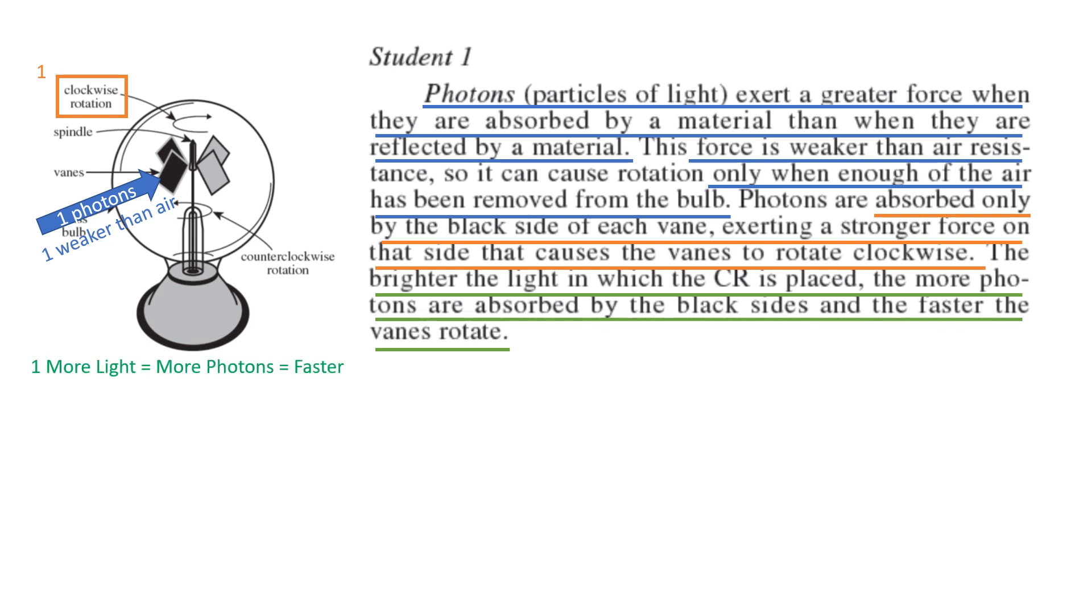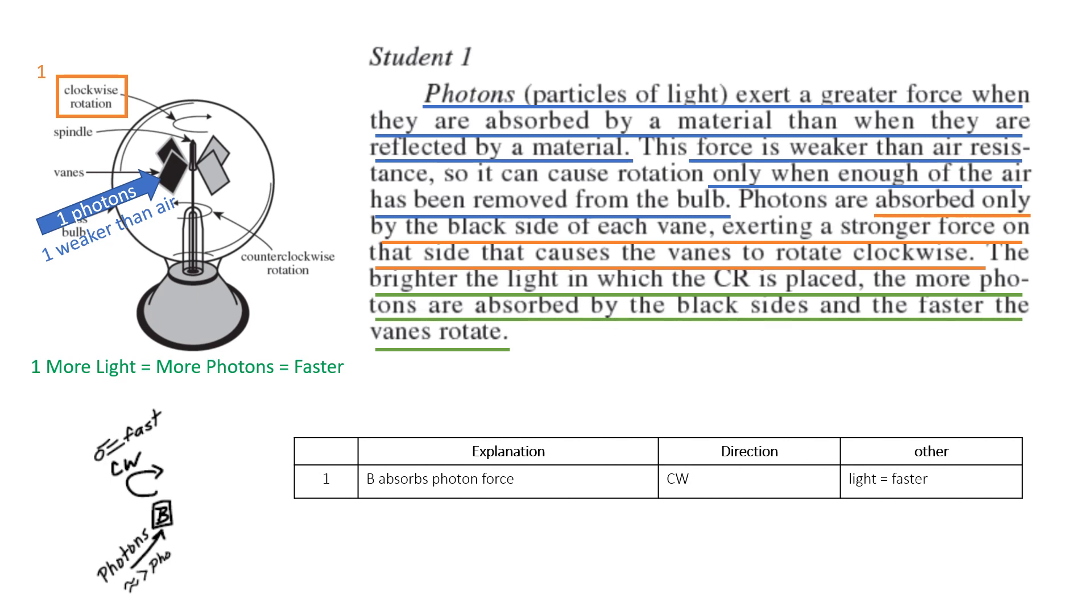They're absorbed only by the black side of the vein, exerting a stronger force on that side that causes the vein to rotate clockwise. So clockwise rotation, number one has clockwise rotation. The brighter the light, when the CR is placed, the more photons are absorbed and the faster the veins rotate. So more light equals more photons. Now, you could draw on the diagram they give you. This is my drawing in the actual test. I just did photons, arrow pointing towards the B, the black side. I said air is greater than photons. It takes more force to do clockwise rotation. This is my light symbol. More light equals fast. Some students will also find that just doing a table helps them.